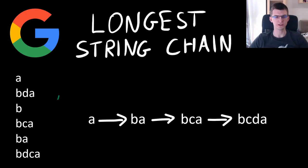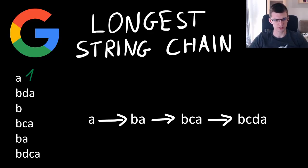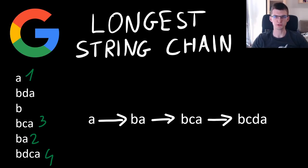We are given some strings — here is an example on the left — and we need to choose some of them and reorder them into a sequence or a chain. Here it will be optimal to do that in order 1, 2, 3, 4, so that every next word in the chain could be created by taking the previous word and adding one letter wherever you want.